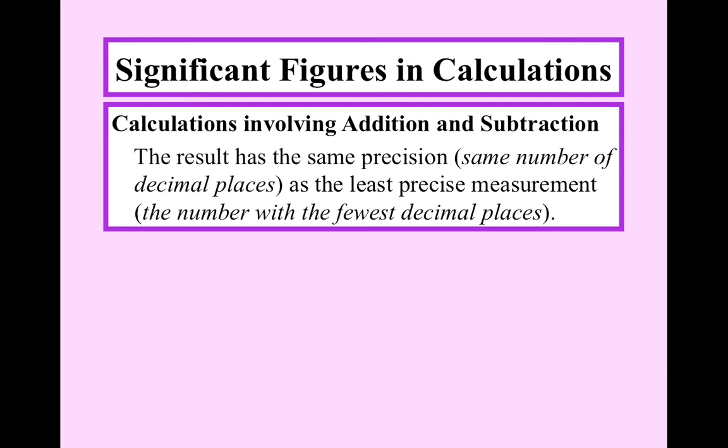Addition and subtraction. Please remember, this is different than multiplication. So, what you do is, typically, you look for the number that has the least number of decimal places. And that's going to determine your overall answer for addition or subtraction. So, if you have two decimal places, you're going to round your answer to two decimal places. And I'll show you an example of this.